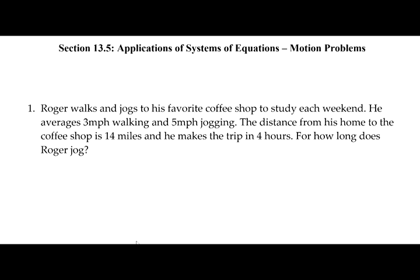Previously we've discussed solving application problems or word problems using systems of equations — problems where we have two variables and set up a system of two equations. We solve using either substitution or elimination; both methods always work and it's a personal preference. In this video I want to talk about one specific type: motion problems, and for these we're going to use the fact that distance equals rate times time, where rate is another word for speed.